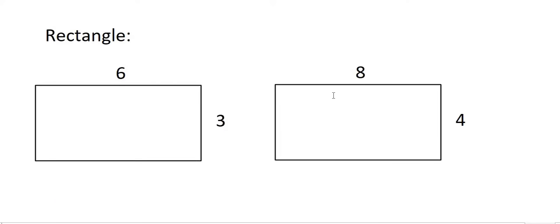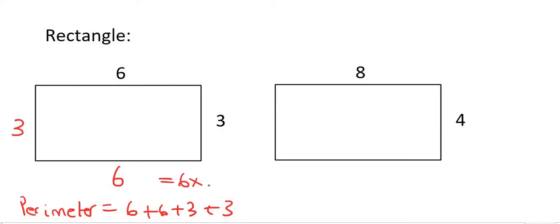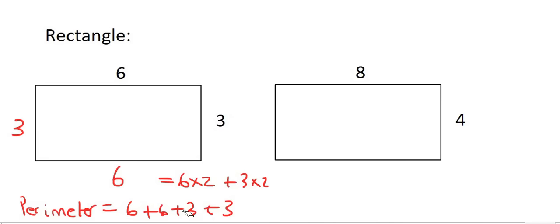Moving on to a rectangle. A rectangle is very similar to a square, but not all of the sides are the same. What we know for a rectangle is that the opposite sides are equal — so one side will be six and the other will be three. To work out the perimeter, remember you just add all the outside parts together: six plus six plus three plus three. Your teacher might write it as six times two plus three times two, because there are two threes and two sixes, but you can do it however you want as long as you understand what you're doing.